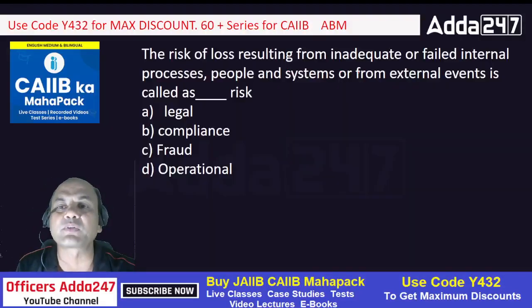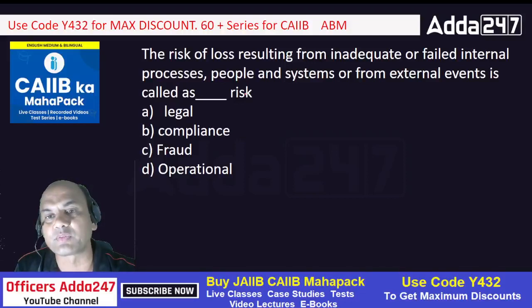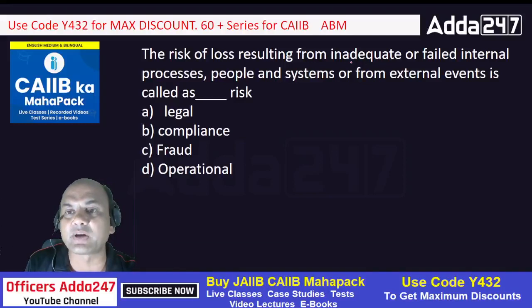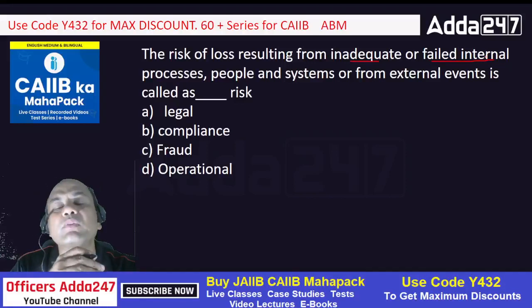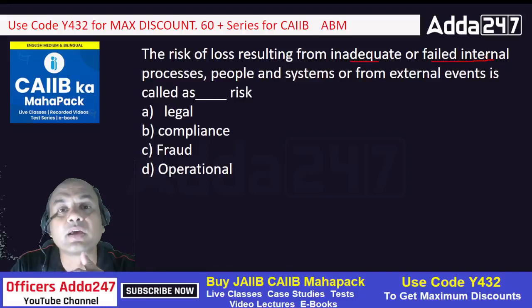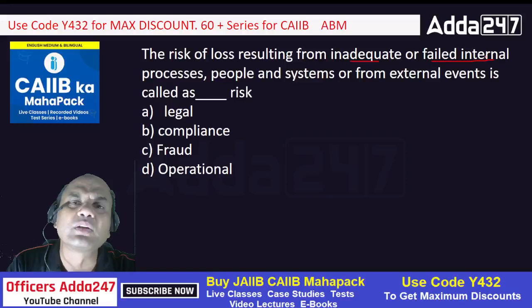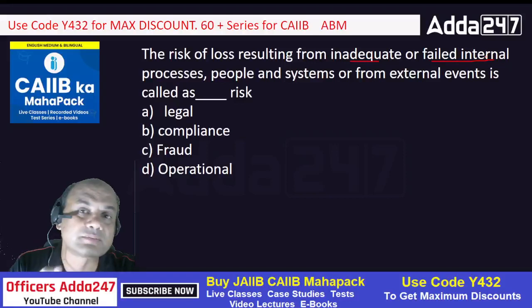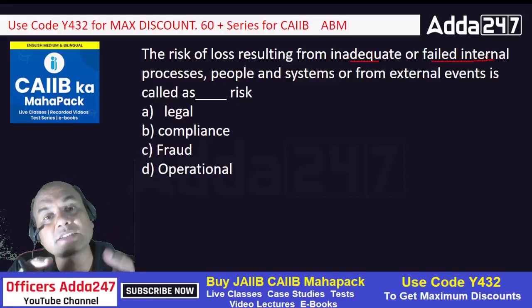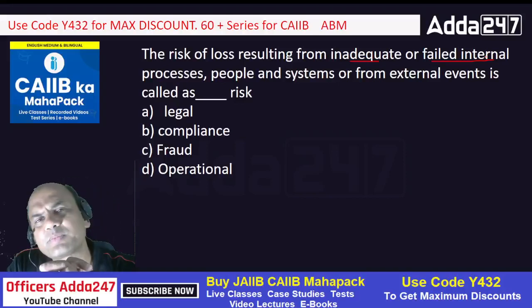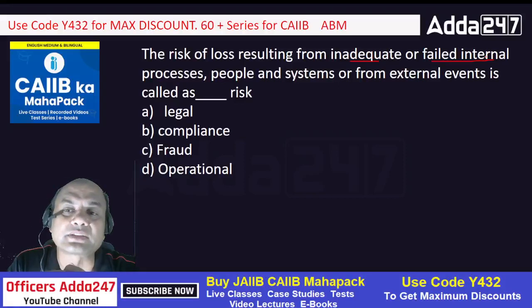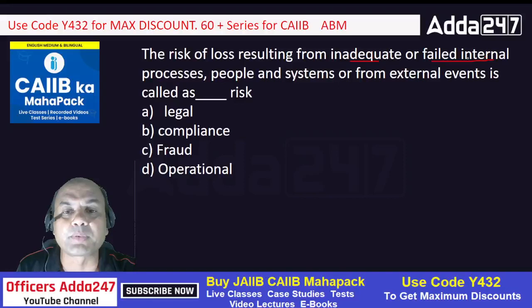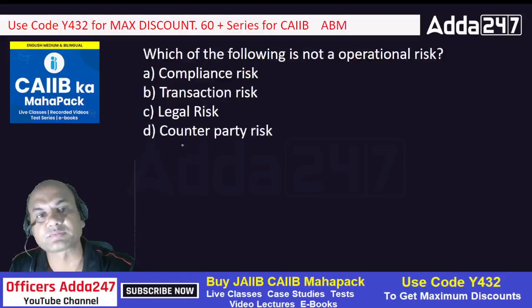The risk of loss resulting from inadequate or failed internal processes, people, and systems, or from external events, is called what risk? Options: legal, compliance, fraud, or operational. Inadequate or failed internal systems — for example, when there is no network link in a bank and you put a board saying 'no link,' that is a serious operational risk. Or a terrorist attack, electricity failure, or flood in your branch — any situation where you cannot service customers is operational risk. The correct answer is operational risk.